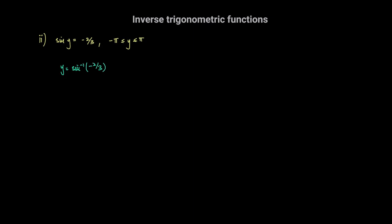This is the inverse sine function, and the inverse sine function will always return a value between negative pi over 2 radians and pi over 2 radians for the angle, or negative 90 degrees to 90 degrees if we're using degrees. So if we take the sine inverse of negative 2 over 3, making sure that our calculators are set in radian mode, we get y is equal to negative 0.730 radians.